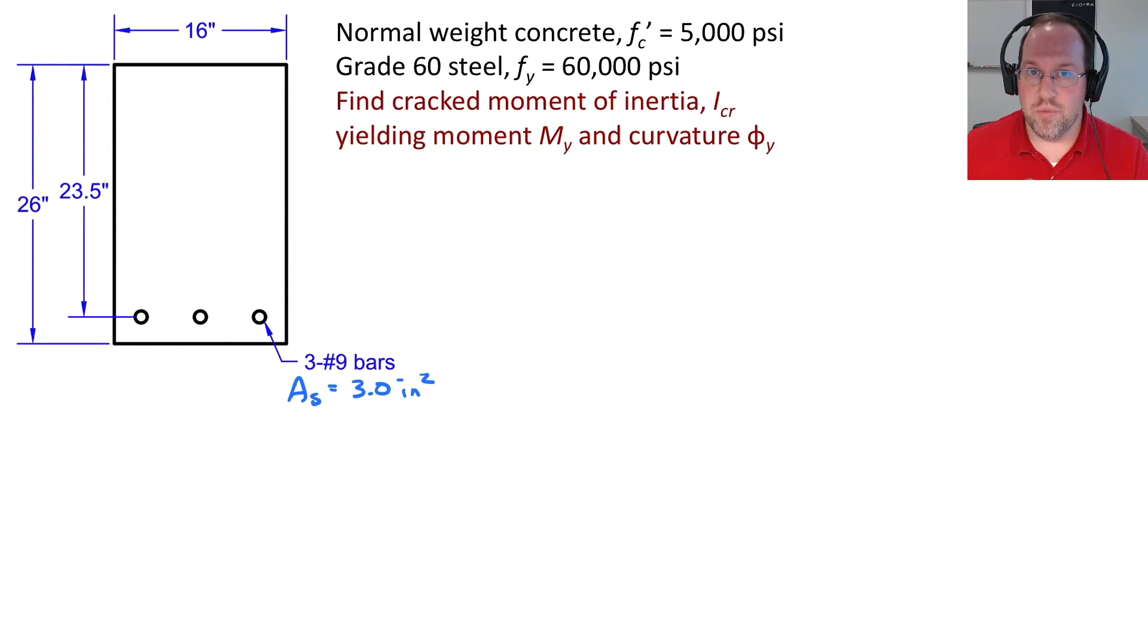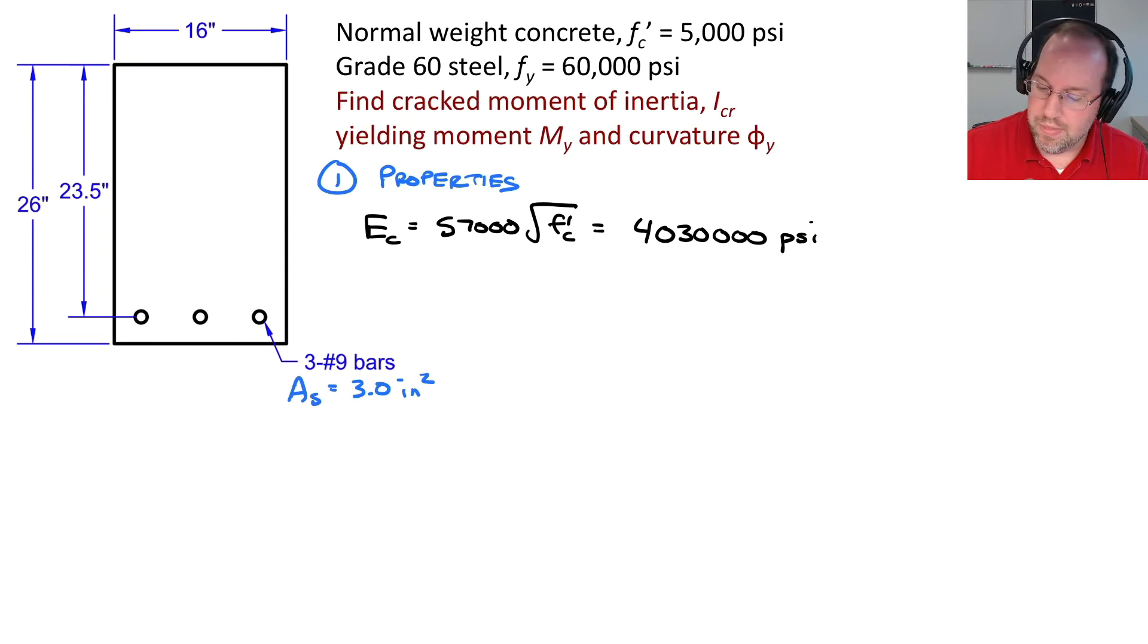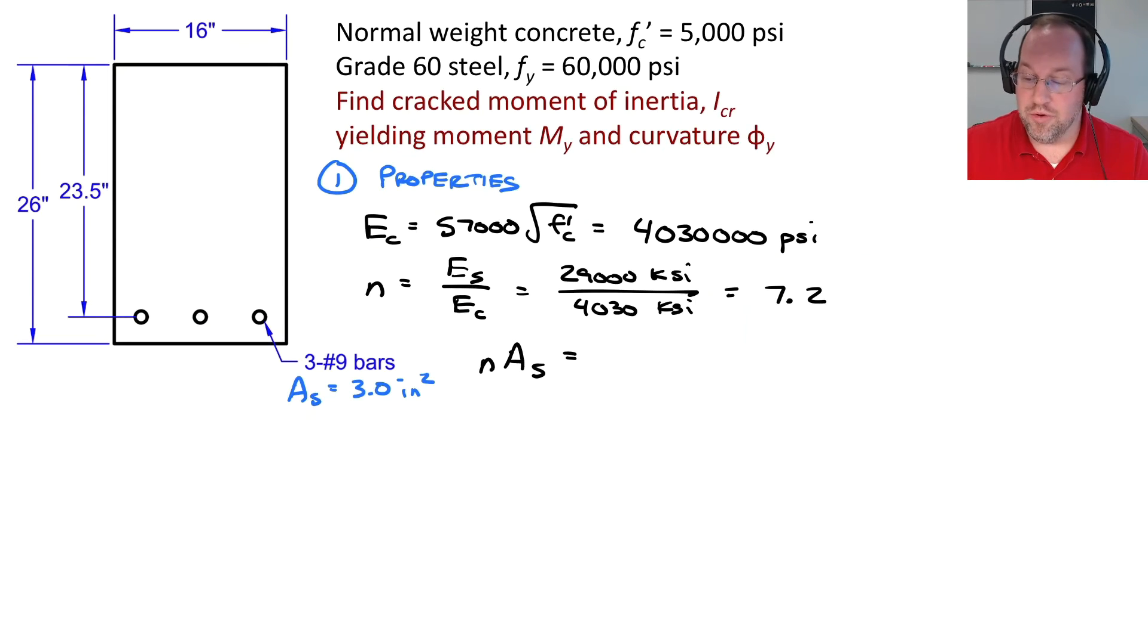So the first thing that we have to do is we need to calculate our section properties. So step 1 is properties. For example, I need a concrete modulus, and that's going to be 57,000 times the square root of f prime C. If I plug in 5,000 PSI, I'll find that this is 4,030,000 PSI. I then also need to calculate my ratio N, which is E sub S divided by E sub C. The modulus for the steel is always the same, it's 29,000 KSI, and my modulus for my concrete is 4,030 KSI. Dividing that out, this ratio is 7.2. And I also need N times AS, and of course being 7.2, AS being 3 inches squared, so this is 21.6 inches squared.